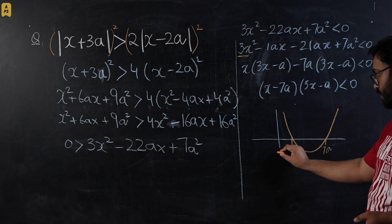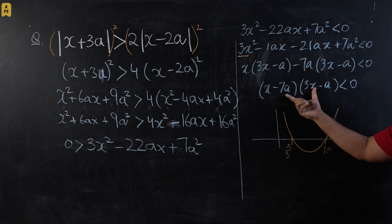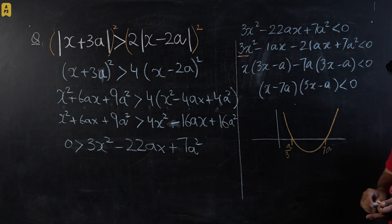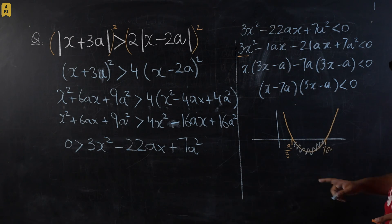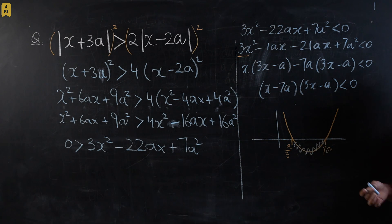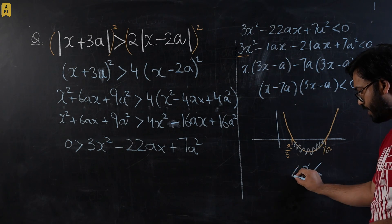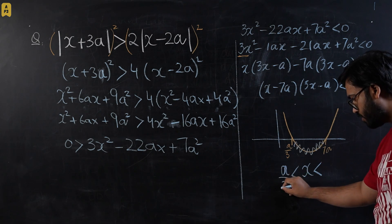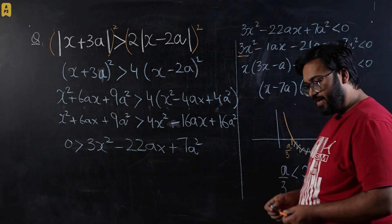Now since this expression is less than zero, I'm going to color the region below the x-axis. So this is the required region of the curve that we need and the inequality for this required region would be that x is between a/3 and 7a. So this is our final answer for the inequality in this question.